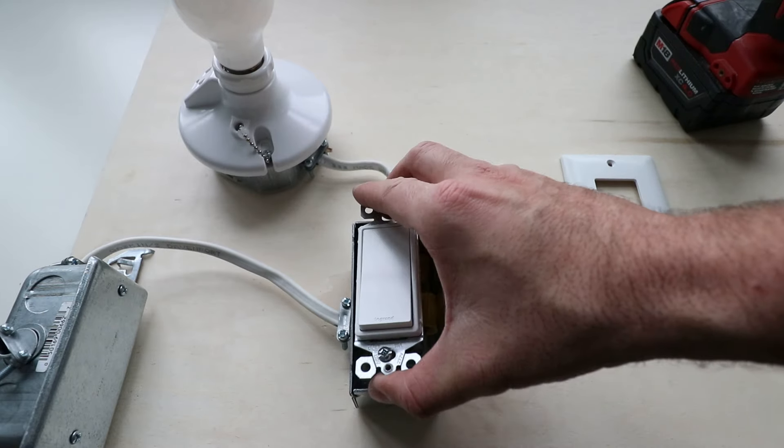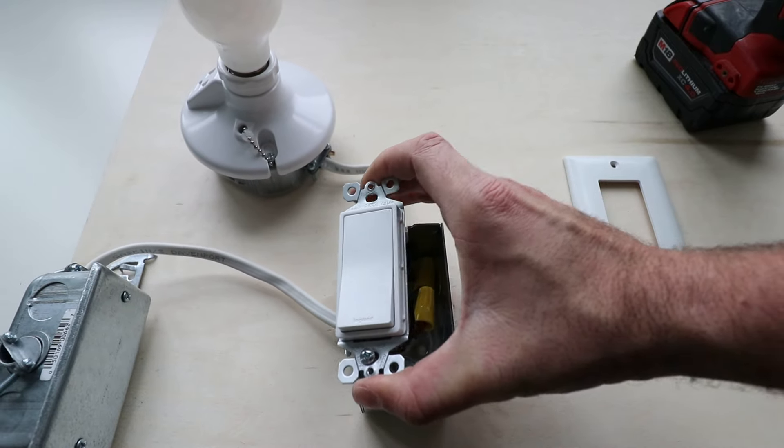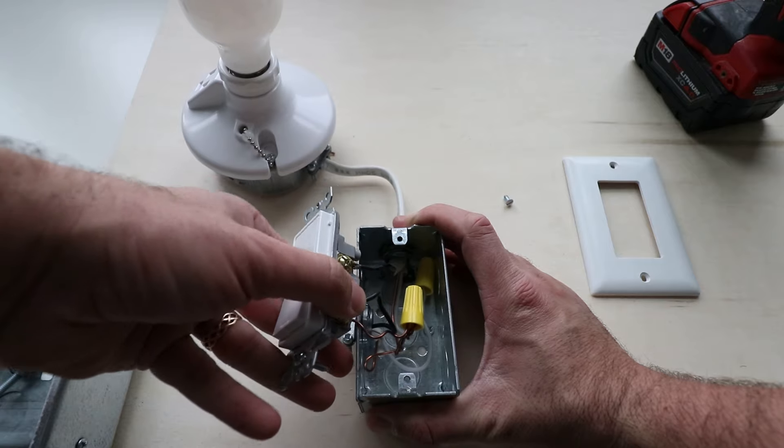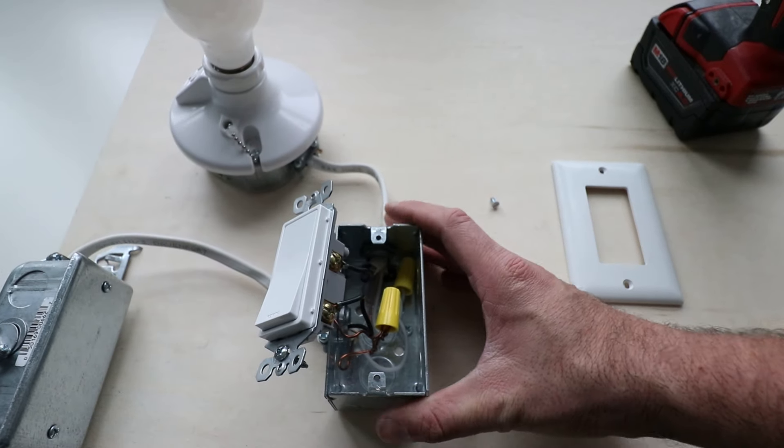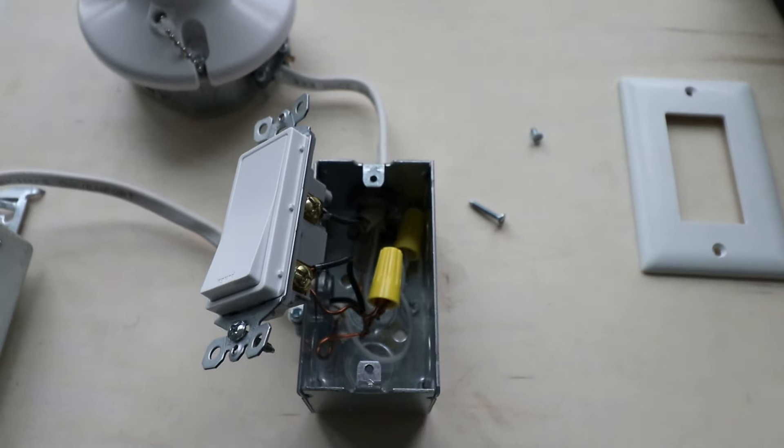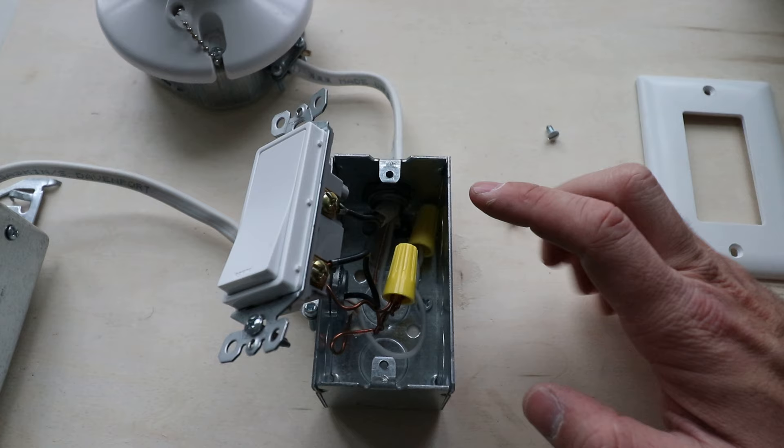The next thing you're going to do is just pull the light switch free. So now what we can see, you just want to pull it kind of out of the box as much as you can so you can look back there. And I'm going to zoom in here. Okay, and you can see what we have here.